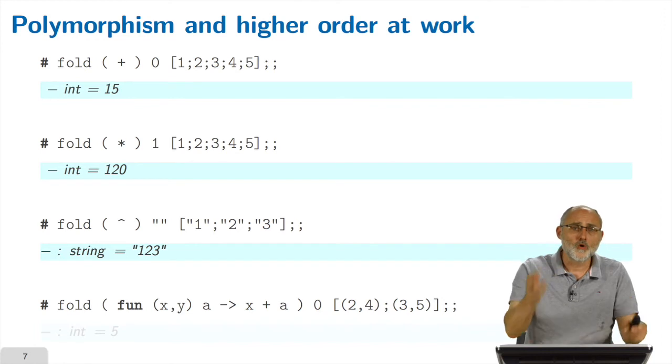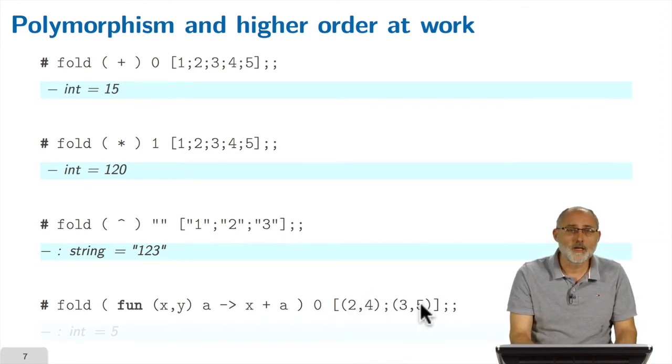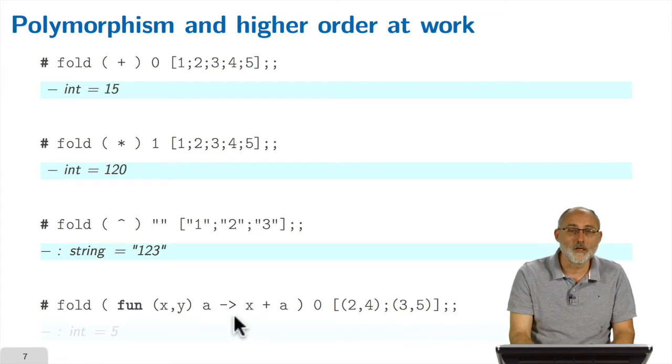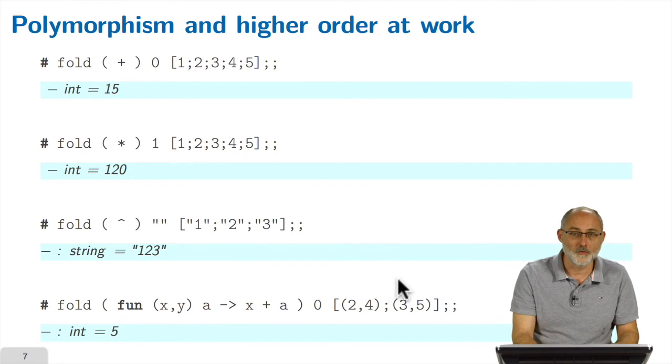And then you can do more complicated stuff, like for example here I have a list of pairs, and I would like to compute the sum just of the first elements of each of the pairs. I mean, here it would be two plus three, which is five. Again, I use the same higher-order function fold, and here as combination operator, I tell the system I will take a pair, and the value a, and add a with the first element of the pair, and zero is written for the first element. And of course the system gives you back five, which is exactly the sum of two and three.